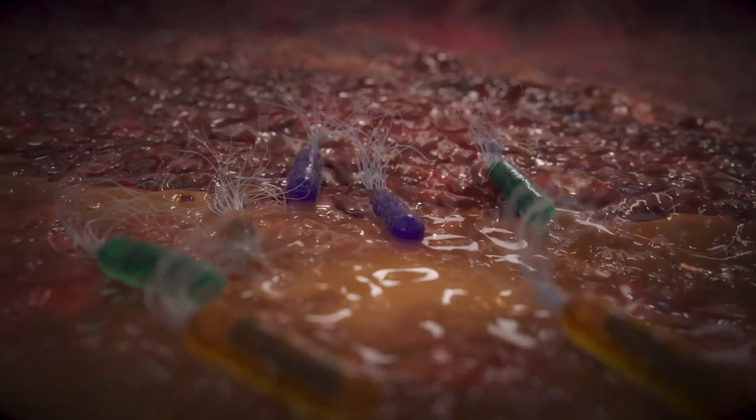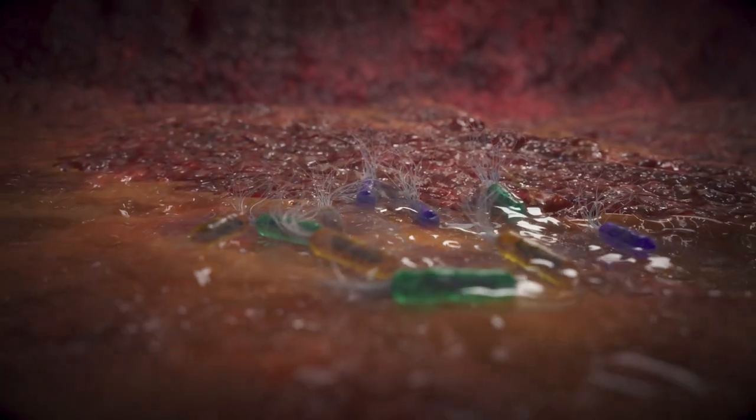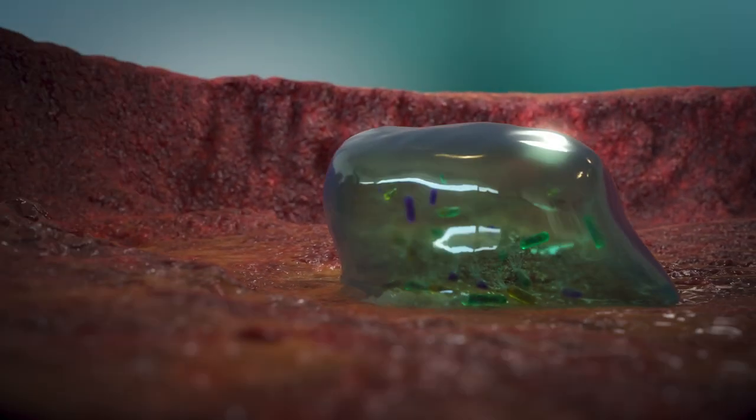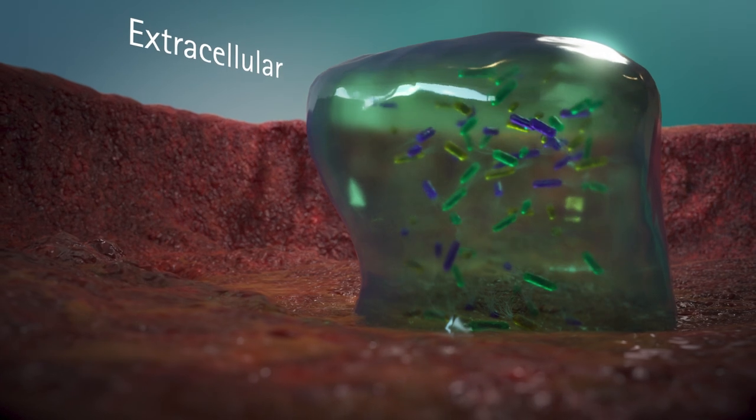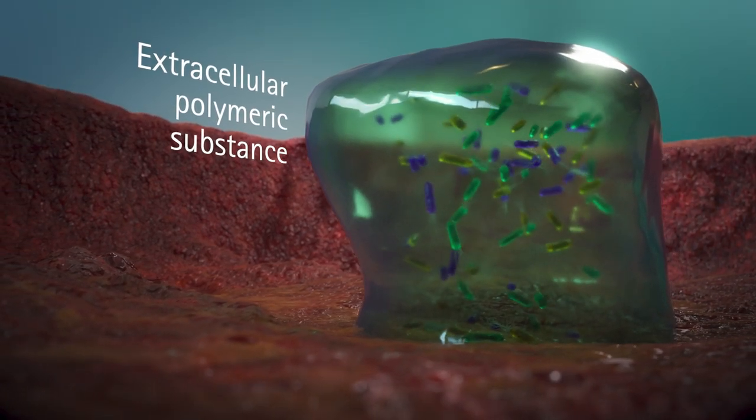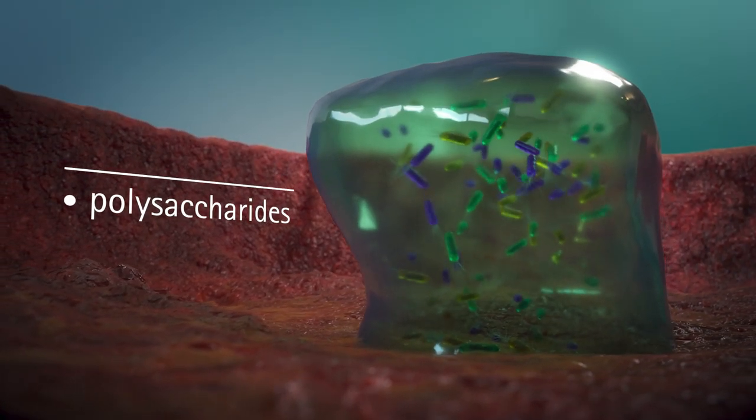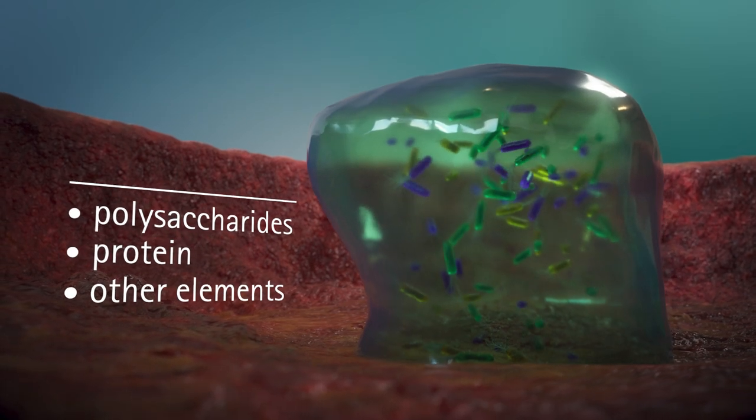Biofilm forms when free-floating bacteria adhere to surfaces and grow a colony. This colony excretes a thick and slimy substance, an extracellular polymeric substance which consists of polysaccharides, protein, and other elements.